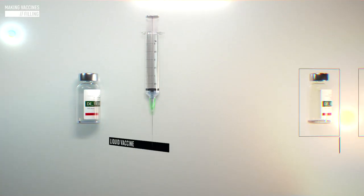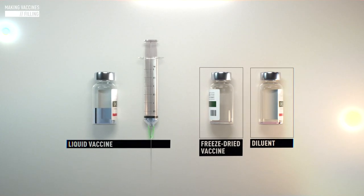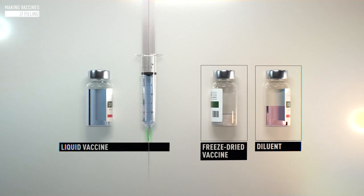The vaccine in liquid or freeze-dried form, and diluents as needed, are then filled into vials or syringes.